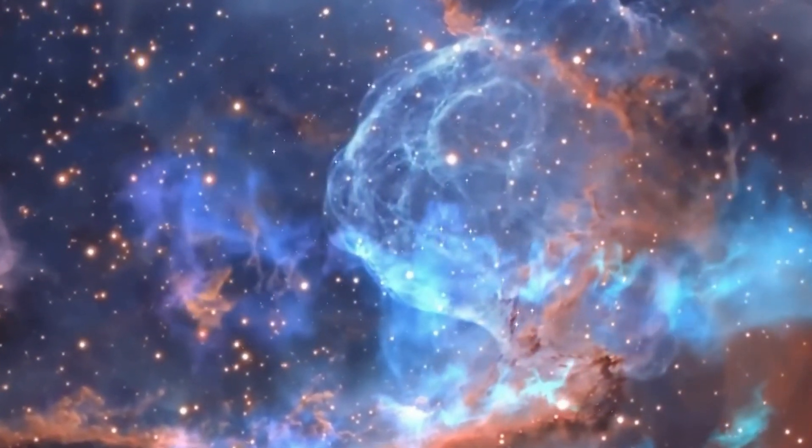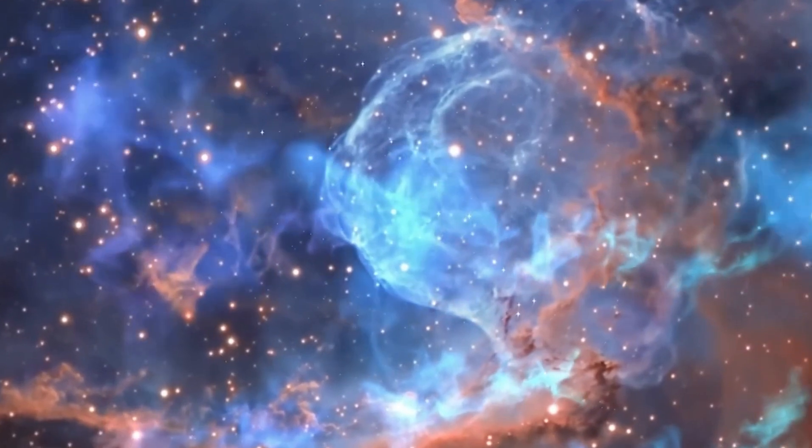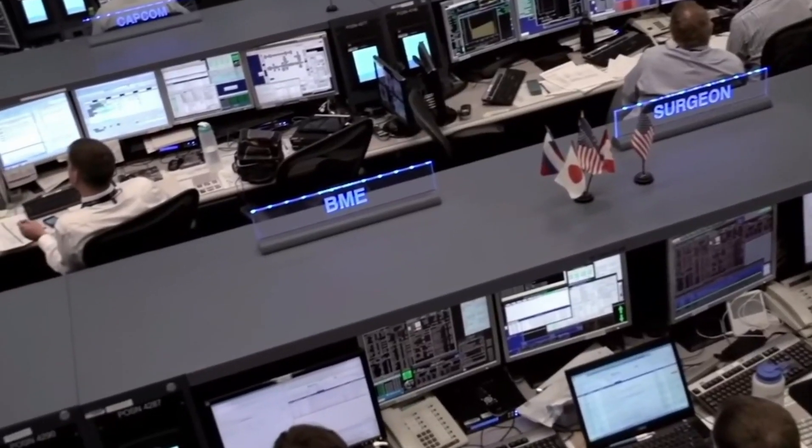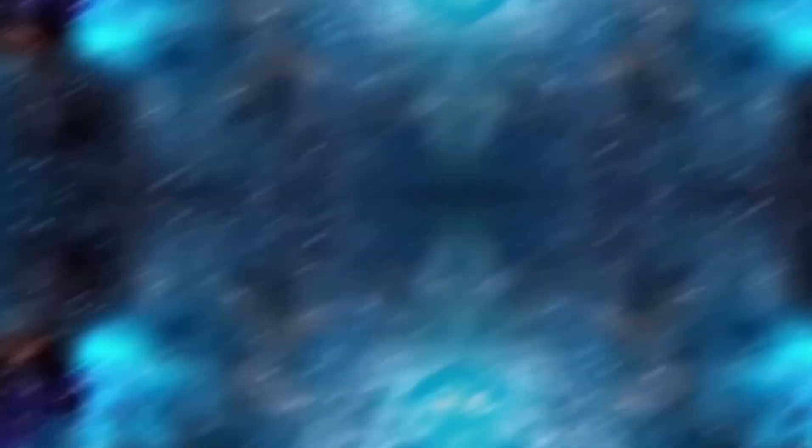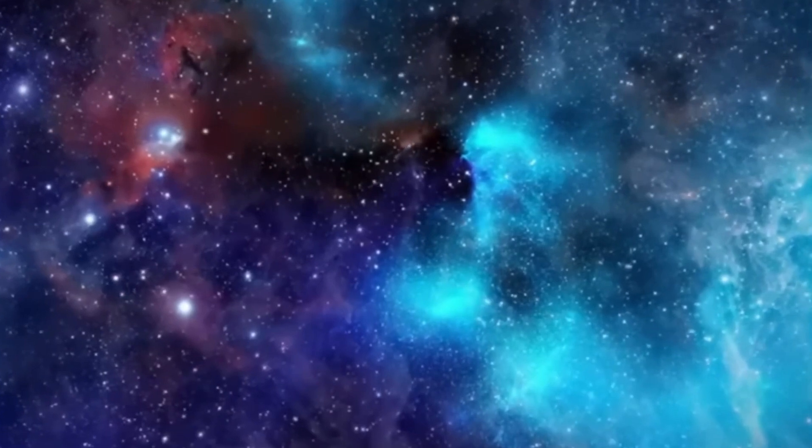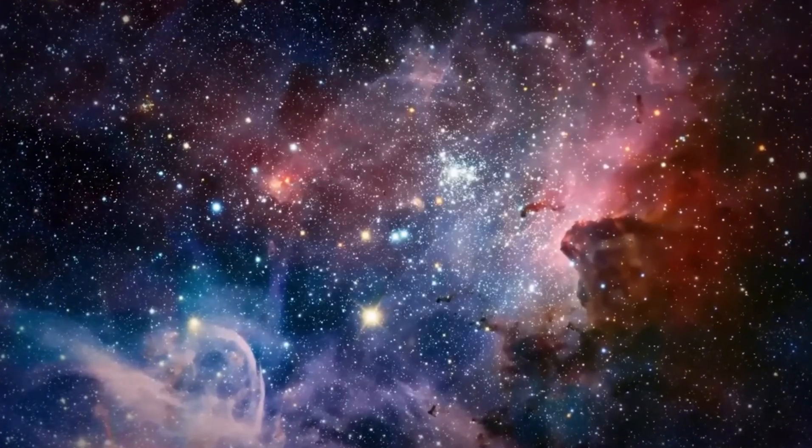Betelgeuse is currently undergoing fusion processes, gradually progressing through various elements like helium, carbon, oxygen, silicon, and iron. As a red giant star, it fuses helium into carbon in its core, a process that takes thousands of years.